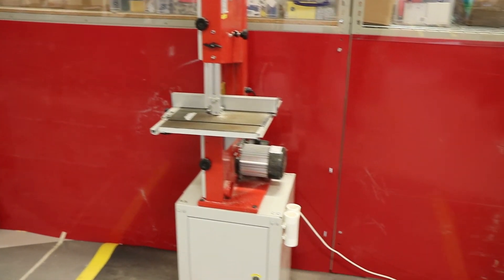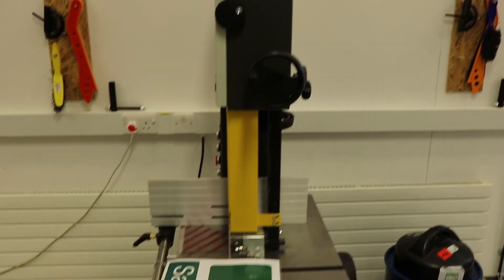There are three bandsaws in the iForge. The smaller red bandsaw is for cutting metal only. The two larger bandsaws are for cutting wood and plastic.